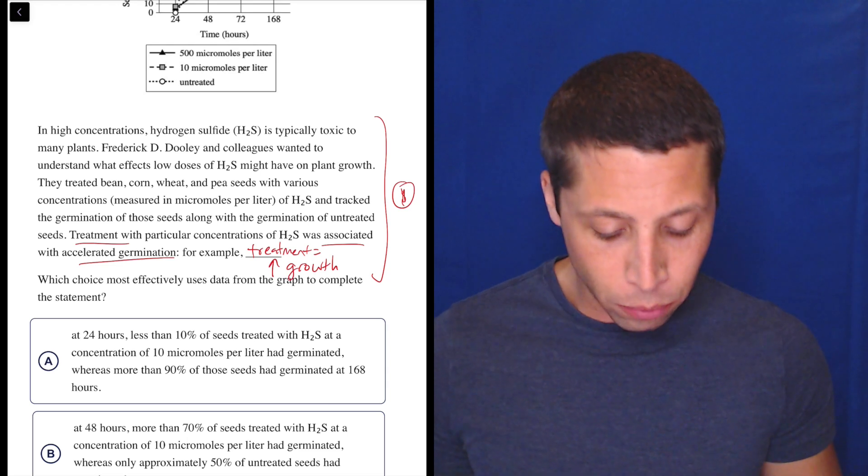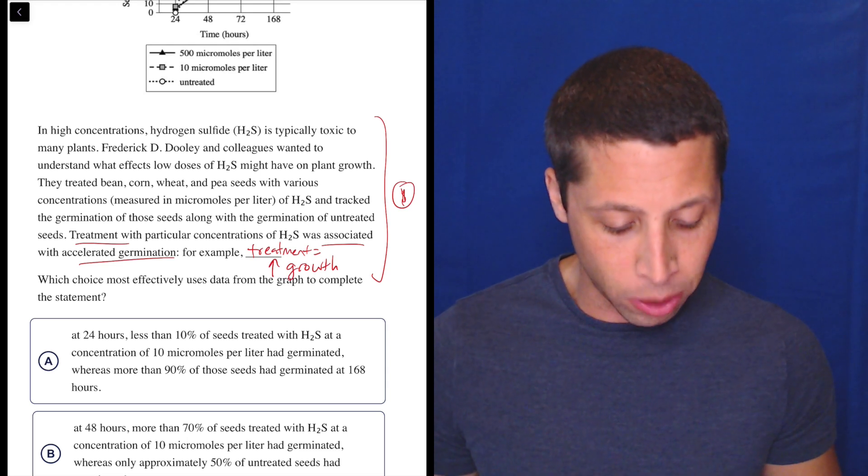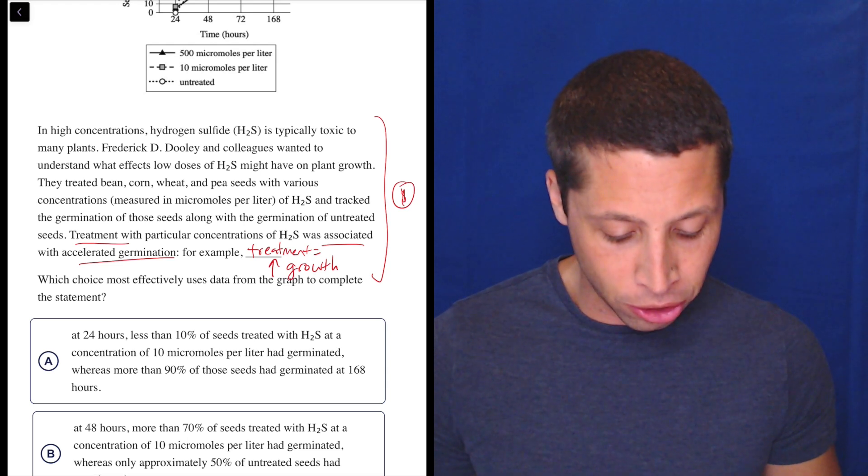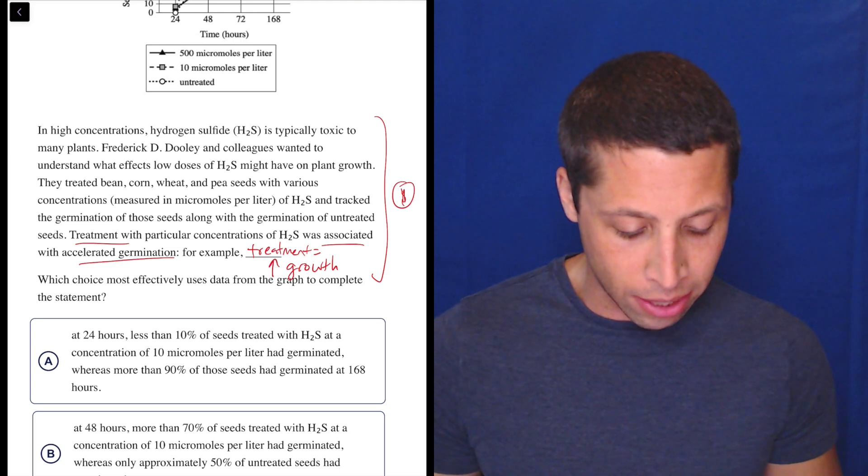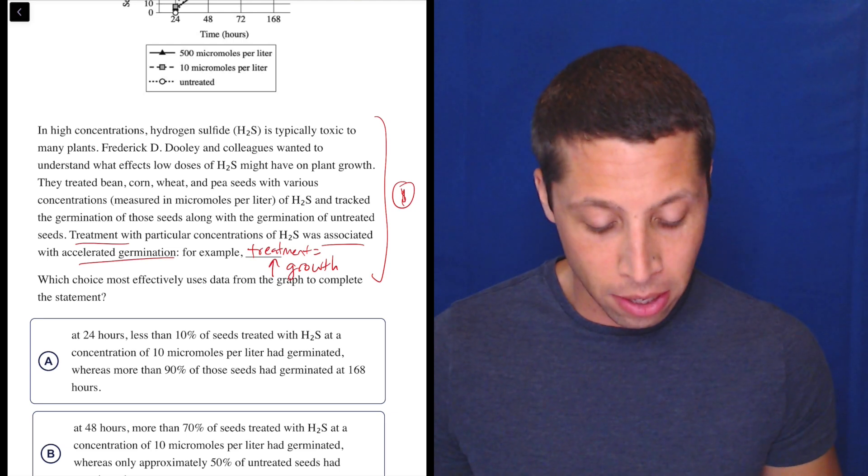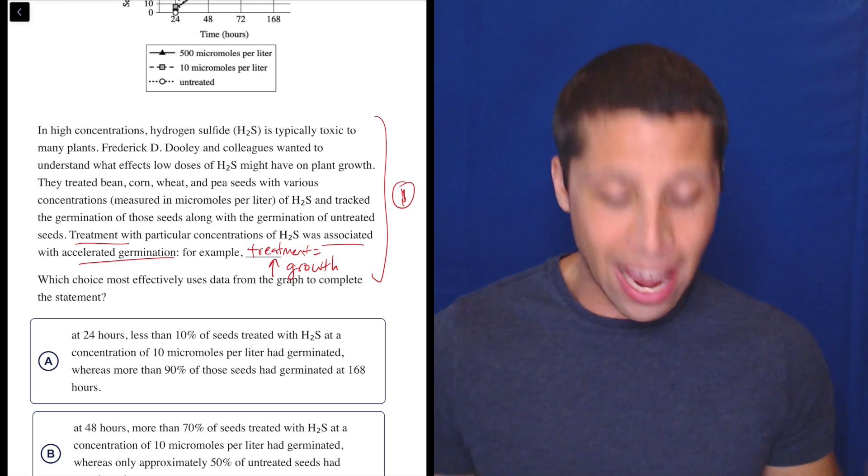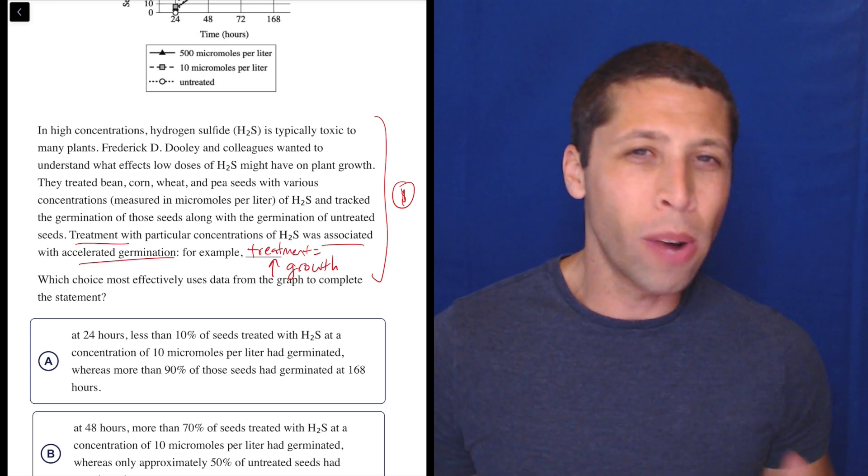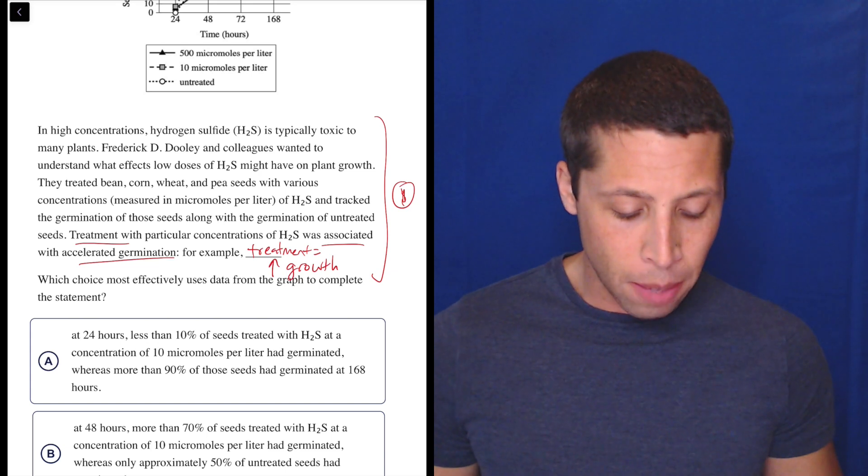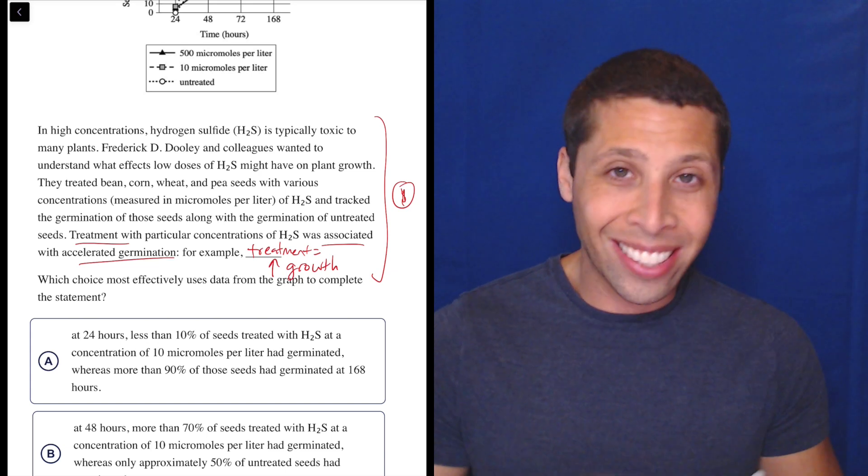So choice A. At 24 hours, less than 10% of seeds treated with hydrogen sulfide at a concentration of 10 micromoles per liter had germinated, whereas more than 90% of those seeds had germinated at 168 hours. Okay. Well, we can go and check that, right? So we can check the accuracy, and many of you are tempted to do that. But before I do, I'm already kind of skeptical of this choice because it's not really saying anything about accelerated growth, right?